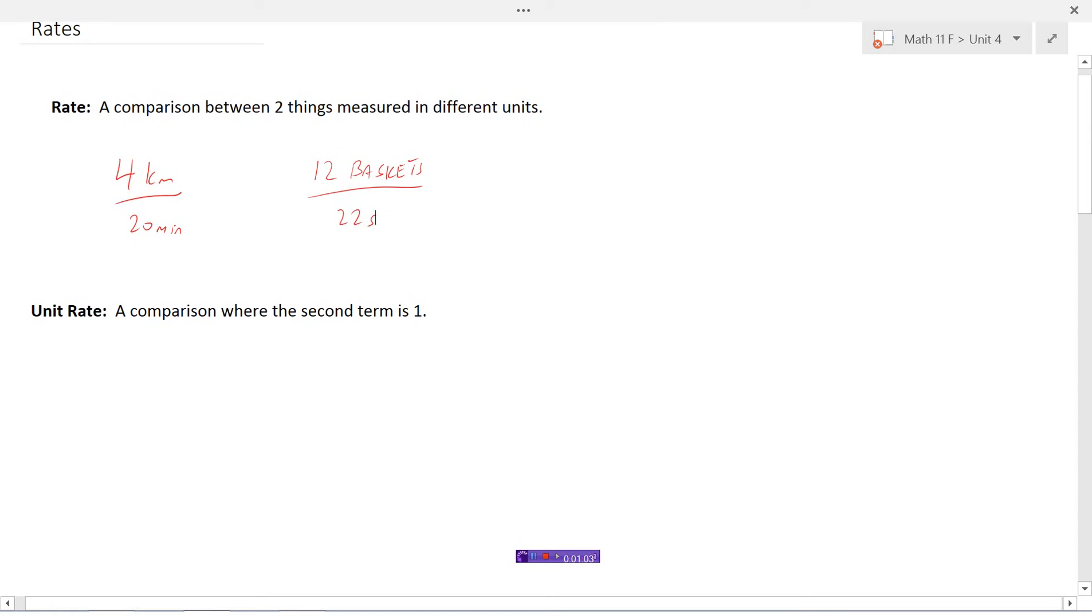Now sometimes we'll compare things when the second term is one. So unit rates. Often speed is measured in a unit rate. Maybe you're driving down the road and you are doing 80 kilometers per hour, and really we mean per one hour. Or maybe you're doing push-ups and you can do 50 push-ups per minute, per one minute. These would be unit rates because the second term is one.